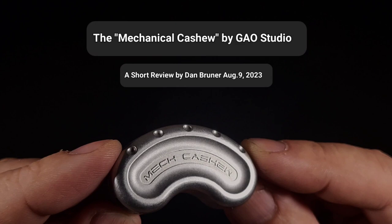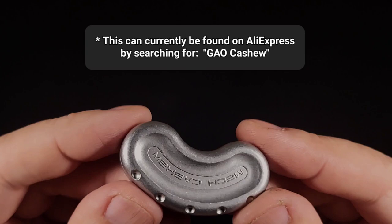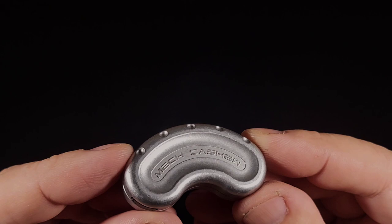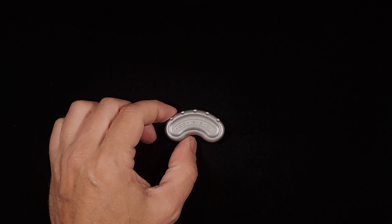Hey everybody, this is the Gaustudio Mechanical Cashew in stainless steel and we're gonna take a real close look at it. This is relatively new. It just arrived today. I've had a couple hours to play with it. I've tuned it to my liking and I'd like to show you how to do the same.